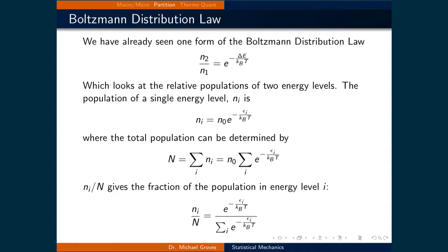Now, ni over n gives the fraction of the population in energy level i, or the probability of being in state i, and can be expressed as ni over n equals e raised to the power of negative ei divided by the Boltzmann constant times T, divided by the sum over i of e raised to the power of negative ei over kbT. Dividing one energy level expression by another returns the originally presented form.